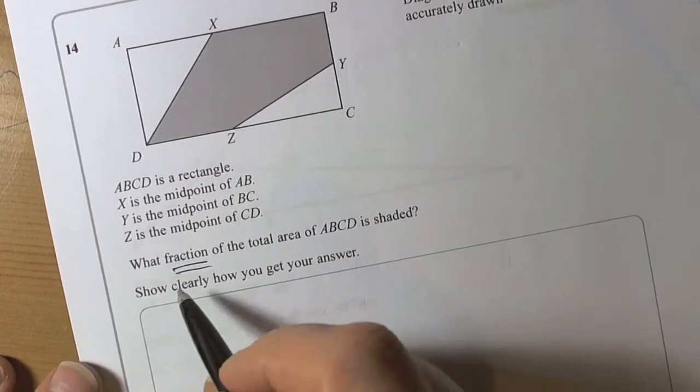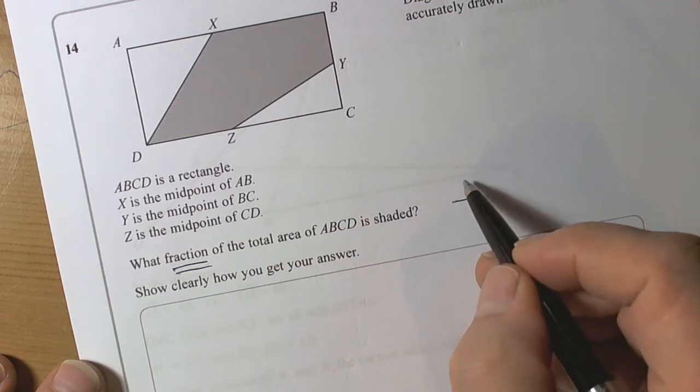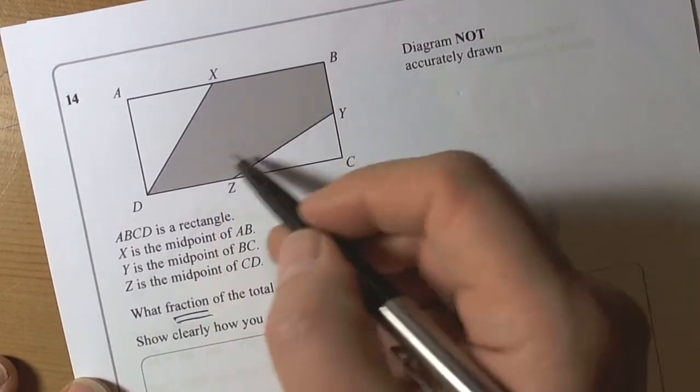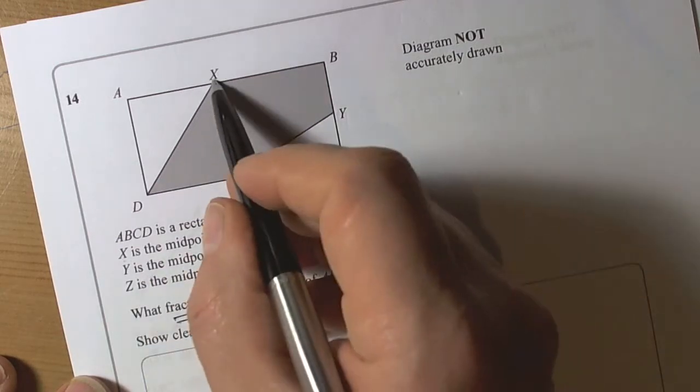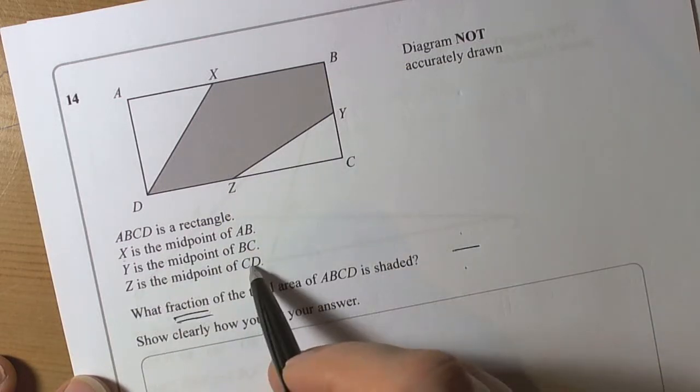So this question is talking about working with fractions, so we need an answer that has a numerator and a denominator. If we look at this shape and take the key information, what we've got is: x is the midpoint of AB, y is the midpoint of BC, and z is the midpoint of CD.